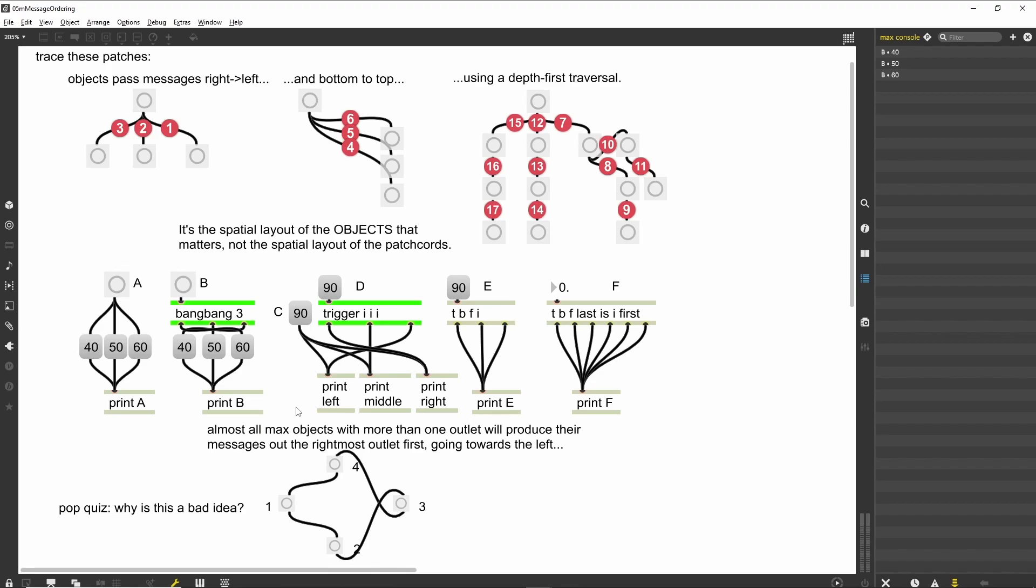Most objects with multiple outlets will follow this rule. Outputs are produced in order from the rightmost outlet to the leftmost outlet. Using the BangBang object makes the message order explicit. That is, it forces the messages to follow a specific path regardless of spatial orientation, and lets us place objects anywhere we want in the patch, knowing that they will be triggered in well-defined order based on which outlets we trigger them from.